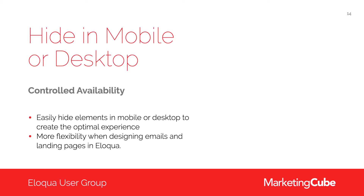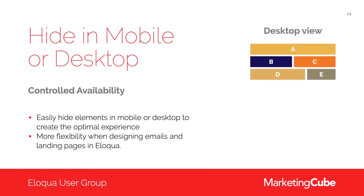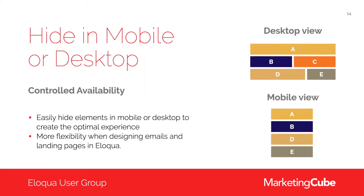What this feature enables you to do is hide elements on mobile or on desktop to create the best possible experience. As we think about mobile-first as a principle — which hasn't gone away — it gives you enhanced flexibility in the way you want to design your emails. As an example, if we pretend this is an email and areas A, B, C, D, and E are different components, you have the ability to change what's visible when you go to mobile view and hide certain components. In this example, you can see that component C has been removed.